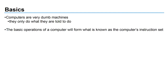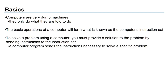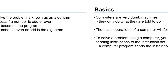The basic operations of a computer form what is known as the computer's instruction set. An instruction set is just how it's going to do something. We need to tell the computer how it's going to do things — we do it in the form of a program. Each computer has an instruction set, which is basically the instructions on the CPU, the processor of the computer. So to solve a problem using a computer, you provide this solution by sending instructions to the instruction set. That's what's happening when you write a computer program — you're sending specific instructions to solve a specific problem via commands to the CPU.